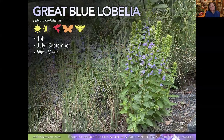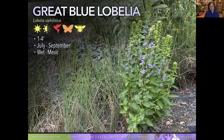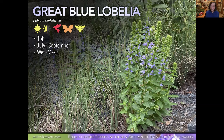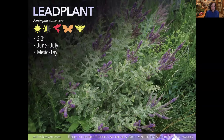Great Blue Lobelia — if you've struggled with Cardinal Flower, which is a close relative, this is a good alternative. Hummingbirds like this as well, and it has beautiful blue flowers on spikes, but I find it much easier to grow. It's a mid to late summer bloomer, adding color when a lot of plants are fading. It will colonize if it's happy, but it's easy to manage — not overly aggressive or hard to dig if it's spreading beyond its limits.